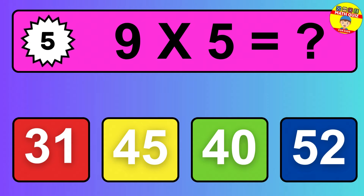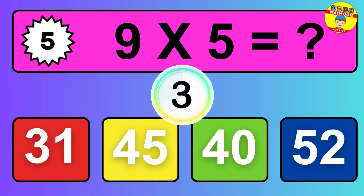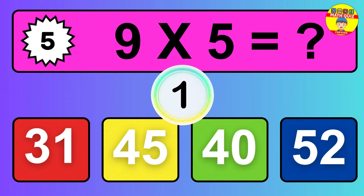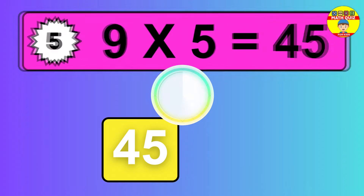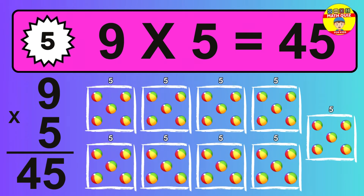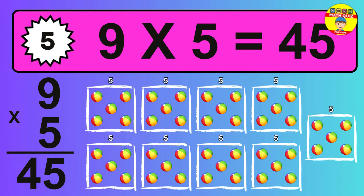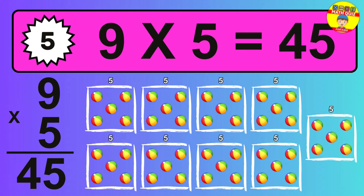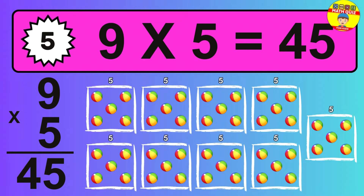Question 5. 9 times 5 equals what? To calculate, we have 9 groups with 5 balls each one. So, how many balls do we have? 45 balls.